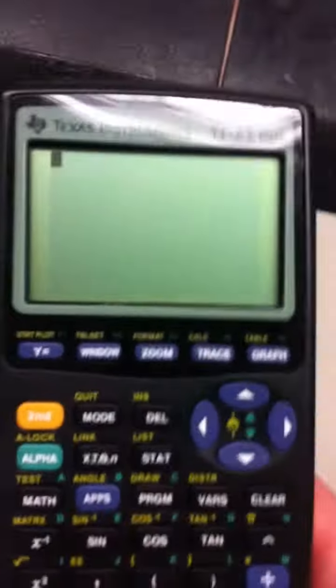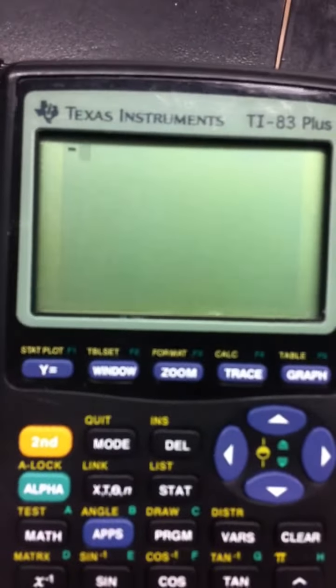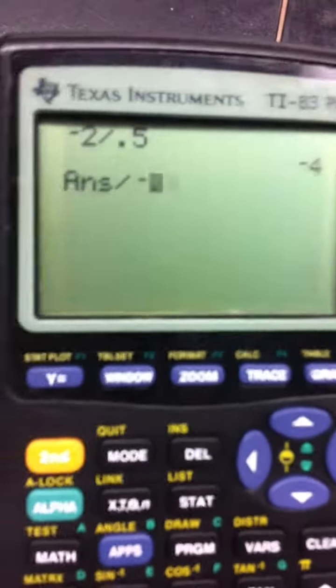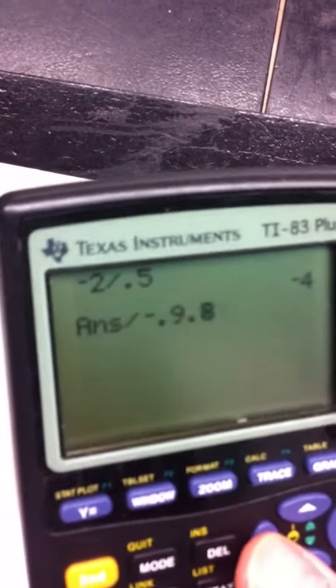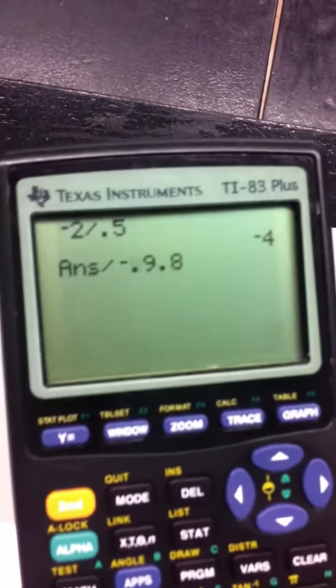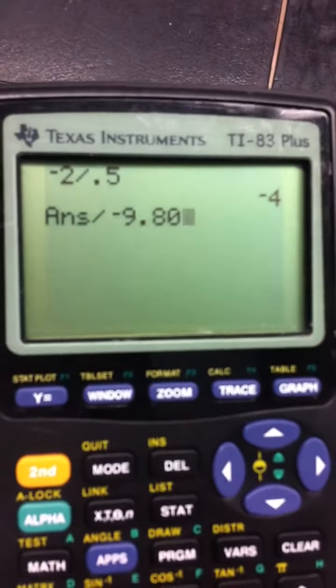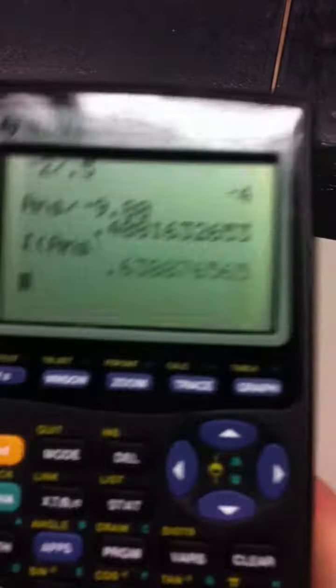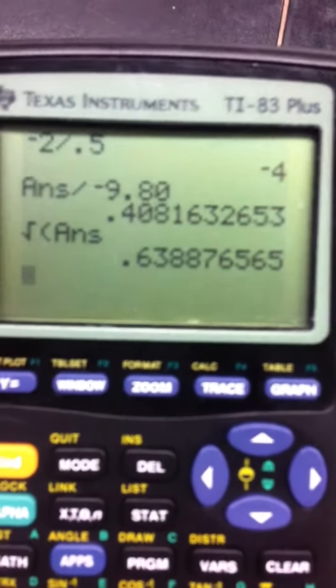We have my code, negative 2, divided by 0.5, divided by negative 9.8. Get the square root of that answer. So it's about 0.64 seconds.